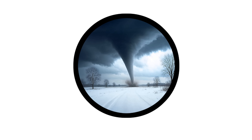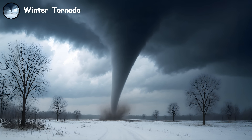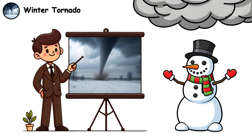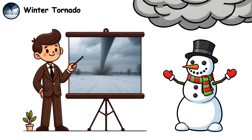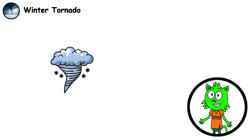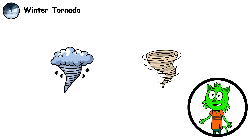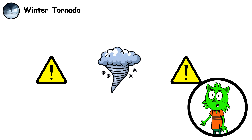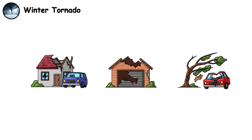Winter tornado. These tornadoes form during cold months, typically from November through February, when unusual atmospheric setups create severe weather during winter. Cold season tornadoes tend to be weaker than their warm season counterparts. However, they're particularly dangerous because people don't expect tornadoes during winter months and may not respond to warnings appropriately.